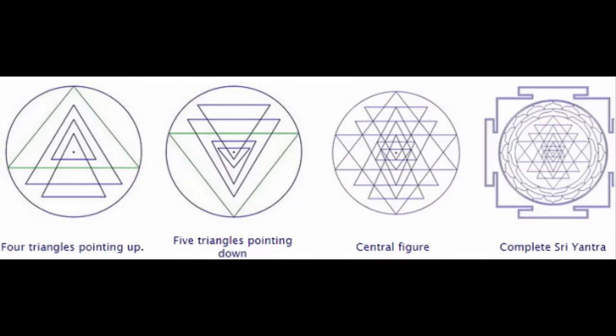Fact 3: The chakra is formed by the superimposition of five downward triangles and four upright triangles — a combination of female and male principles. The downward triangles represent the female principle, i.e. Shakti, and the upright triangles represent Shiva. All nine interlocking triangles lead to the creation of 43 smaller triangles, each one of which represents a deity associated with a certain aspect of existence.